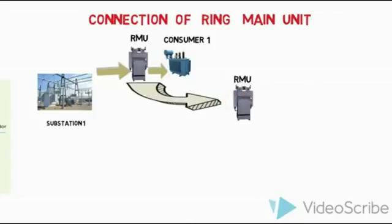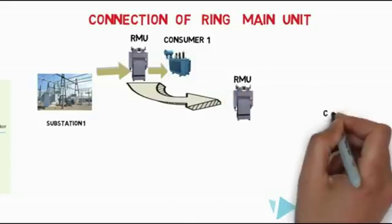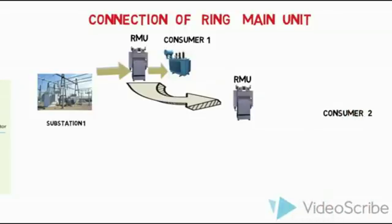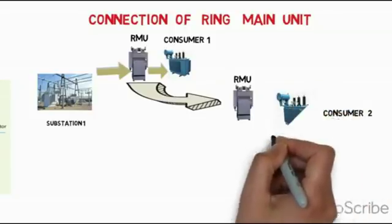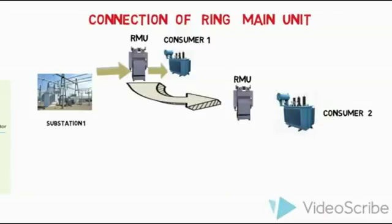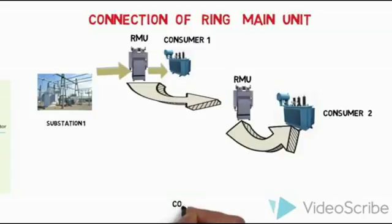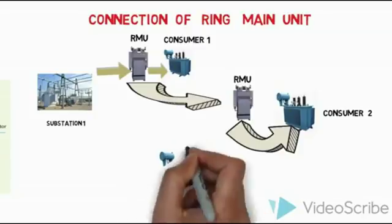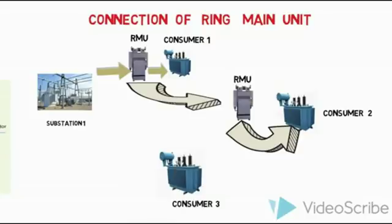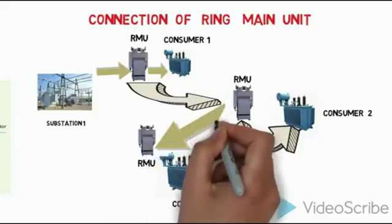The next customer transformer supplies power to the next consumer. This loop continues for the third customer — the third consumer and third ring main unit work the same way. Finally, the power supply loop ends back at the substation. This is how the ring main system is used on the distribution side, and it is also used from generation to distribution substations. It is a very simple method.